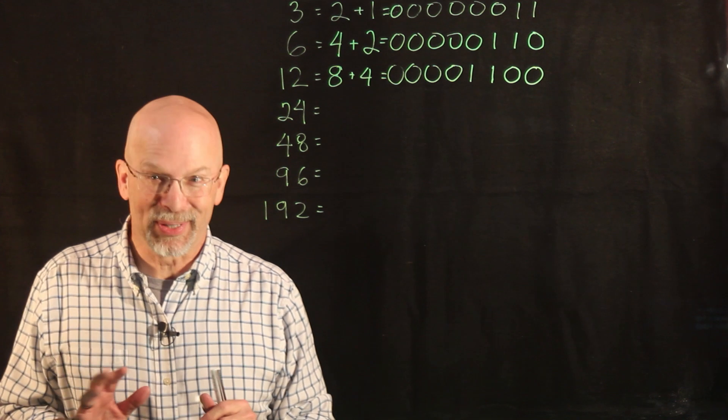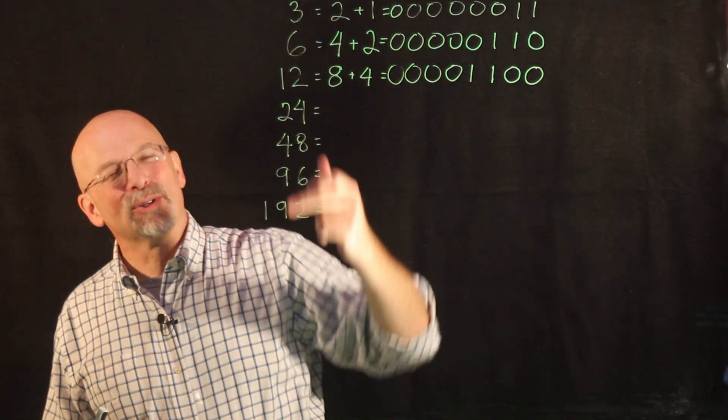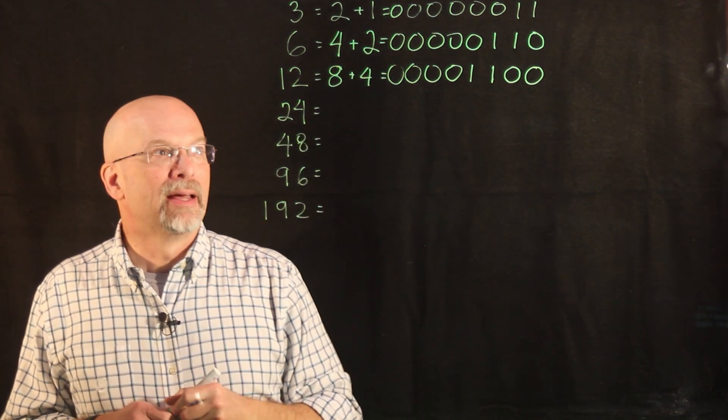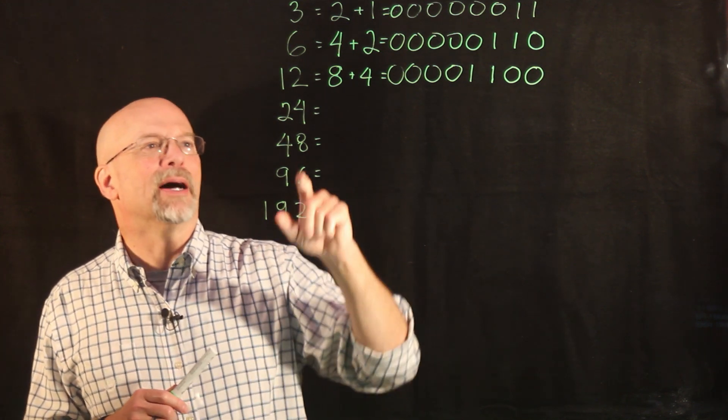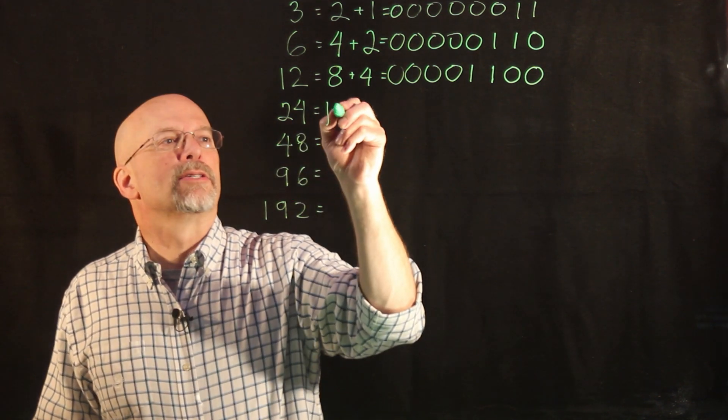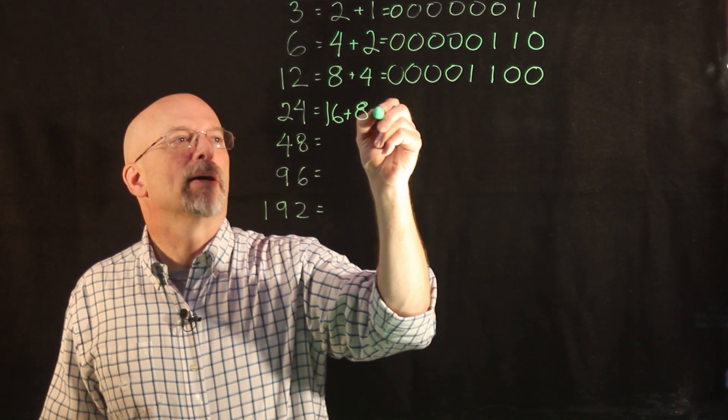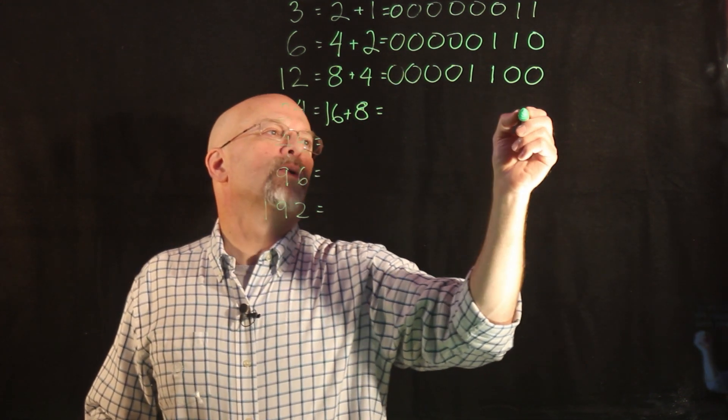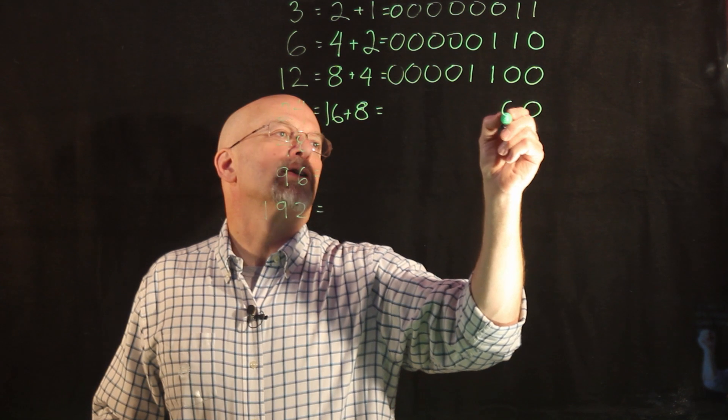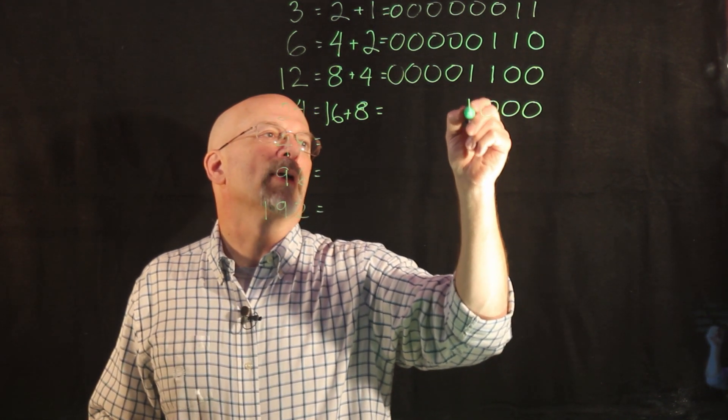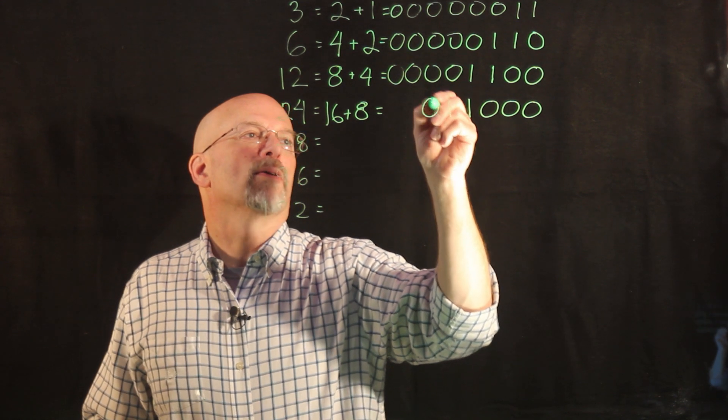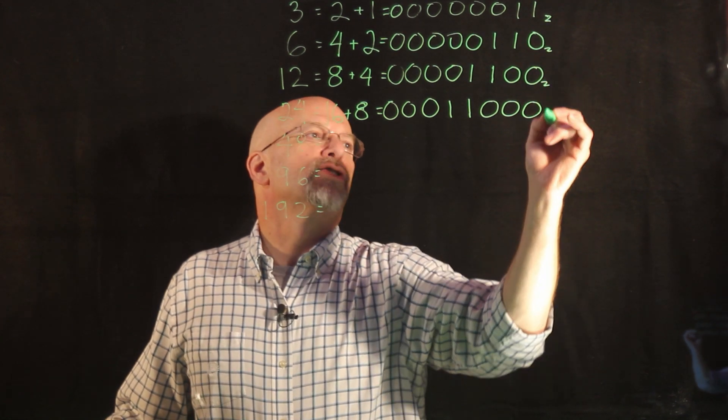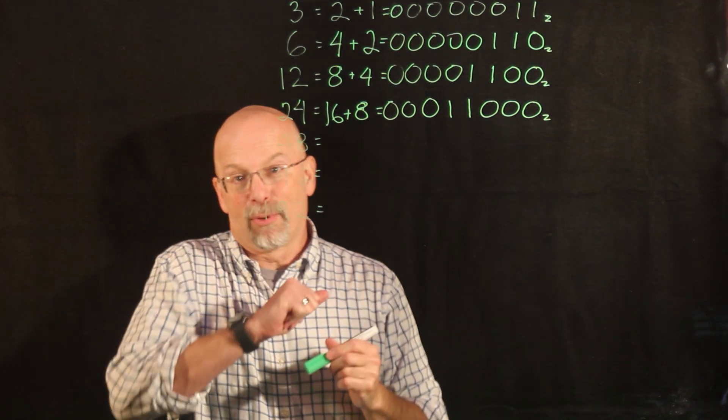You probably saw as I was writing these numbers down that each subsequent one is twice the one before it. This has something to do with what we're going to be talking about here. 24 is 16 plus 8, also two powers of two. So we have two to the fourth and two to the third.